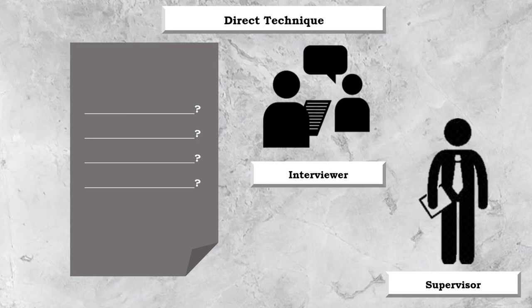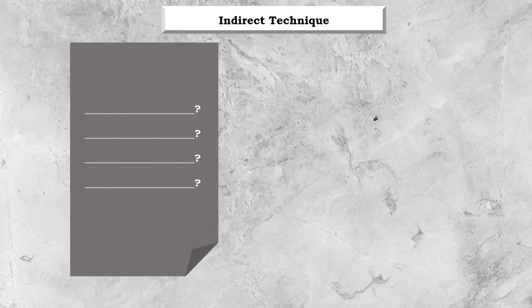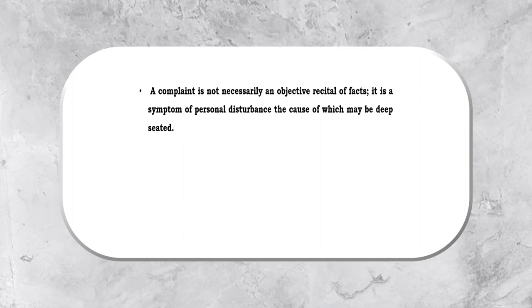The researcher observed that the replies of the workmen were guarded. Therefore, this approach was replaced by an indirect technique in which only the interviewer or the researcher was present and he simply listened to what the workmen had to say. The findings of this study were: A complaint is not necessarily an objective recital of facts, it is a symptom of personal disturbance, the cause of which may be deep-seated.